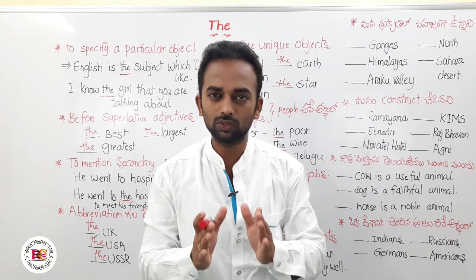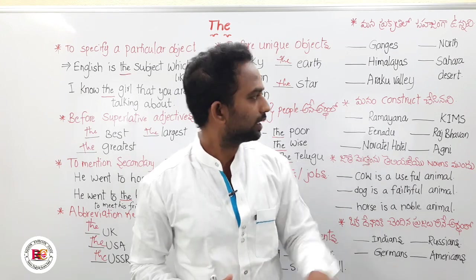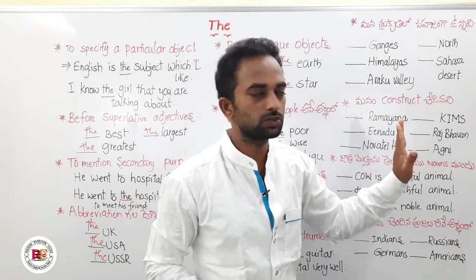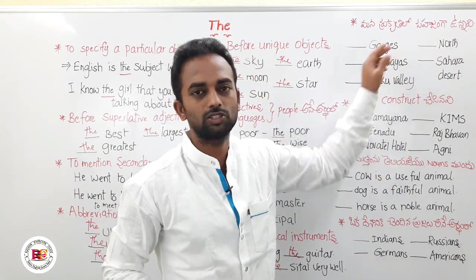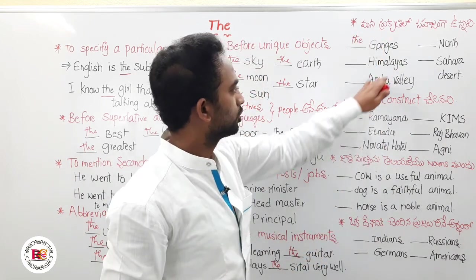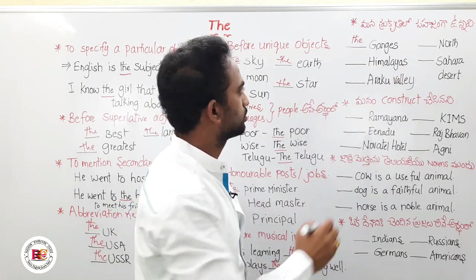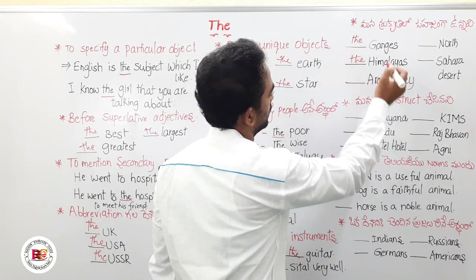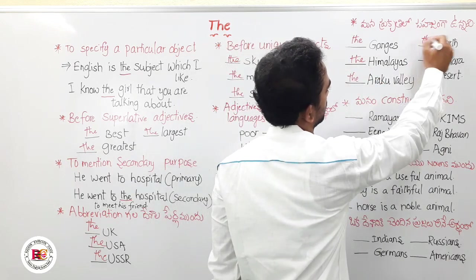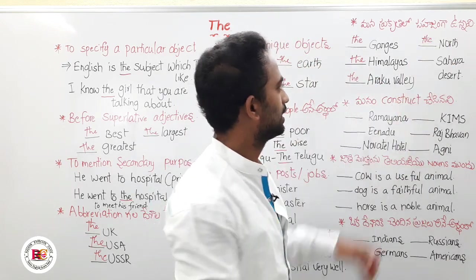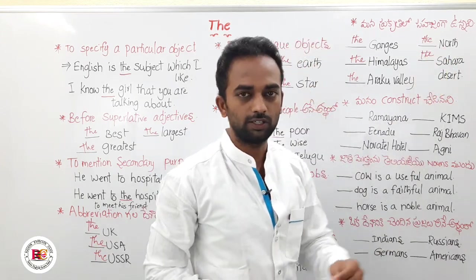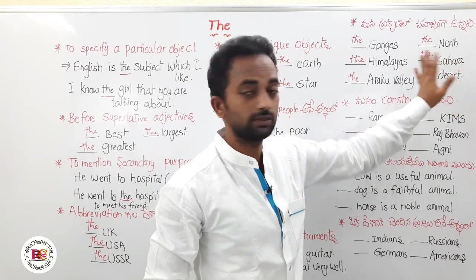So let me give a few examples. The Ganga — Ganga is a river, so we say 'the Ganga.' The Himalayas — the Himalayas are mountains, so we use 'the.' For directions like north, we say 'in the north.' These are all examples of geographical features where we must use 'the'.